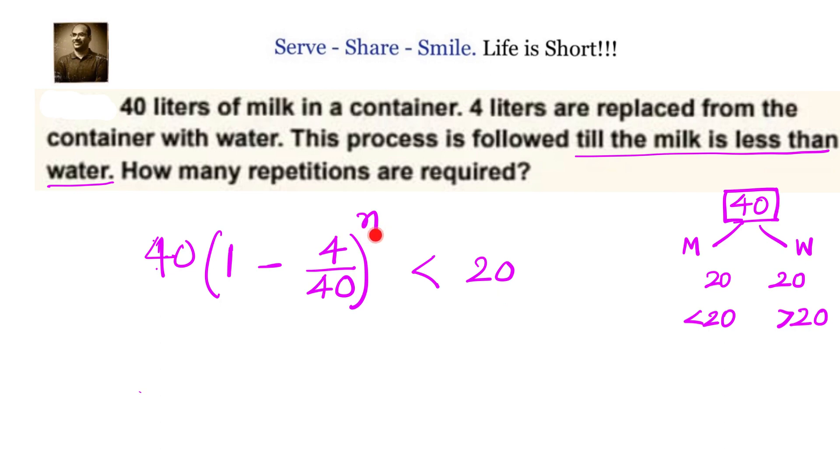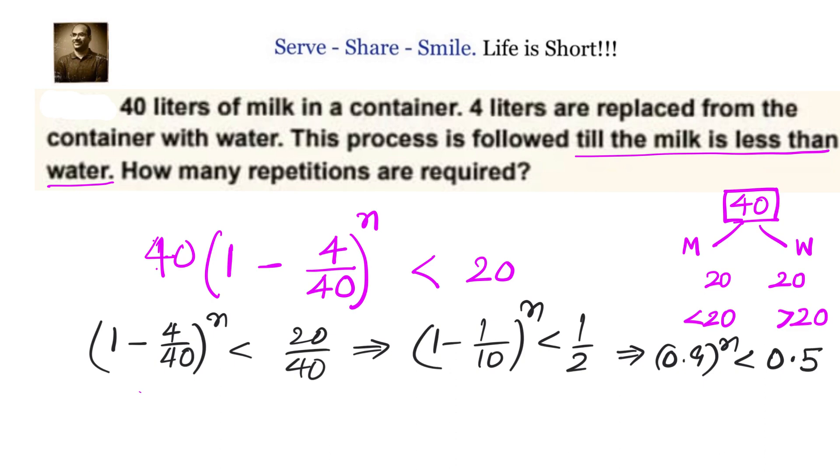This is what we need to calculate, the n value. Let us go ahead and simplify this inequality. We have (1 - 4/40)^n < 20/40. That will give us (1 - 1/10)^n < 1/2. That will give you 0.9^n < 0.5.